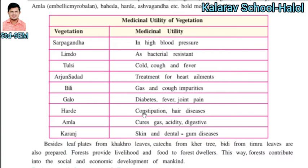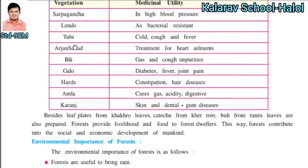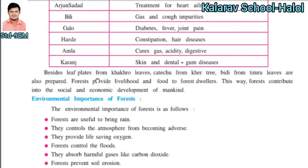Galo is very useful for constipation and hair disease. Harde is very useful for gas, acidity and digestive problems. Amla is very useful for skin and dental germ disease. Karanj is also very useful. So these medicines come from the forest and are useful during various diseases.